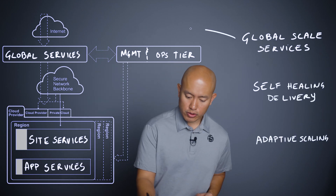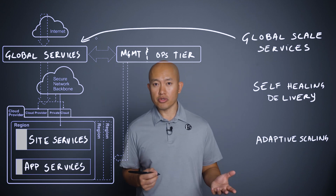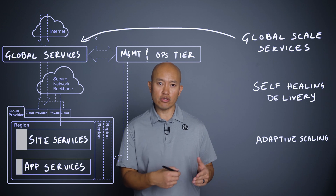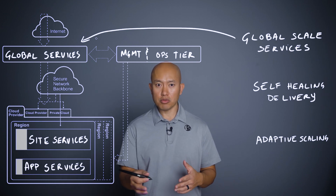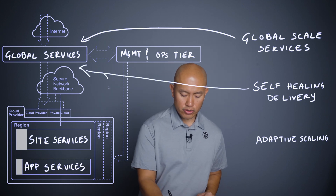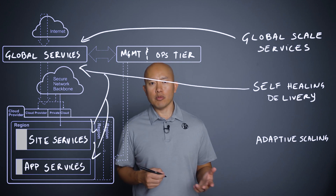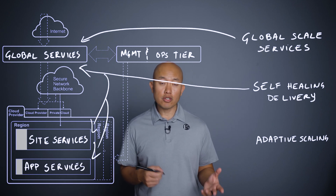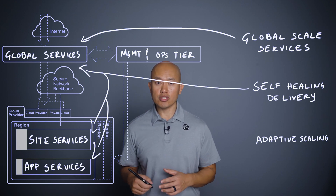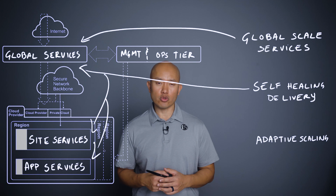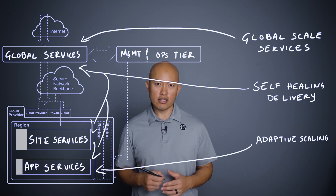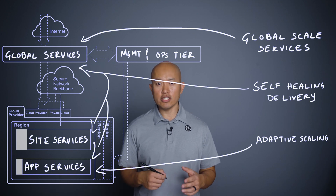Global scale services would include things like global server load balancing, DNS, and API gateway delivering real-time experiences near the user. Global security services stop malicious traffic before it becomes costly. Self-healing delivery uses health checks and real-time performance monitoring to enable underperforming sites, clusters, and instances to be automatically removed from service, with alternate serving locations handling the increased load. Adaptive scaling is where system components scale in and out in response to changing performance demand.